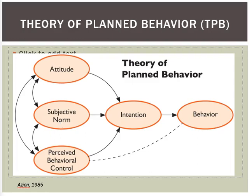The third construct is perceived behavioral control, which refers to a person's perception of the ease or difficulty of performing the behavior of interest. It can vary across situations, resulting in a person having a varying perception of their control over the behavior depending on the situation. This is the construct that was added later, creating the shift from the Theory of Reasoned Action to the Theory of Planned Behavior.